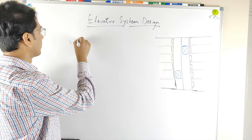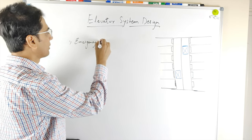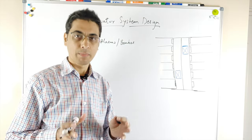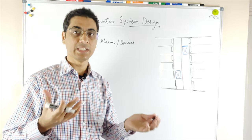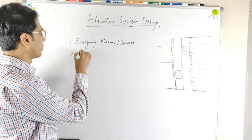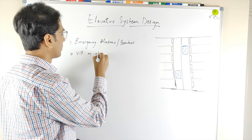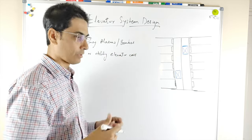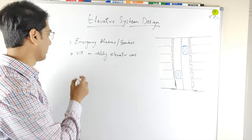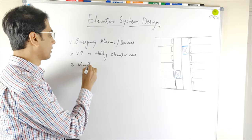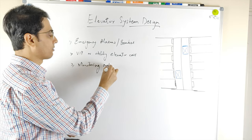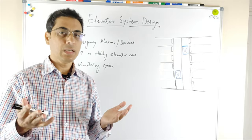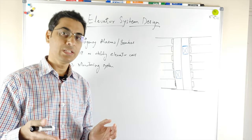Apart from these requirements there are extended requirements as well, for example triggering emergency alarms or brakes. There could also be VIP or utility elevator cars in the system. Apart from that there could be a monitoring system monitoring the status of elevator cars, doors, and button panels. Let me know in the comments below if I have missed any important requirement.